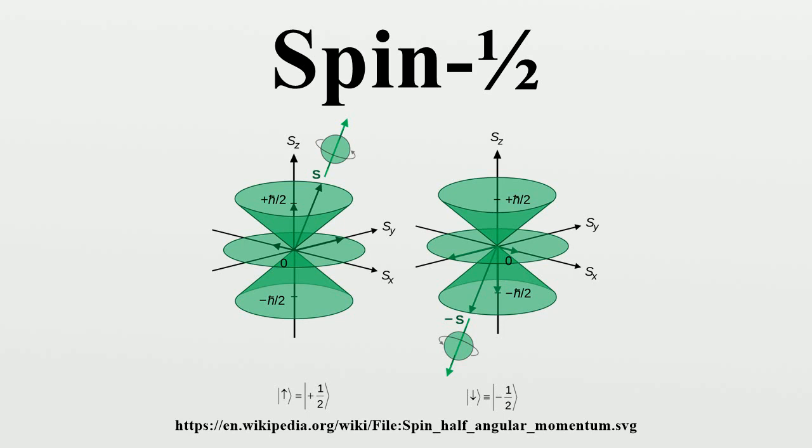A spin one-half particle is characterized by an angular momentum quantum number for spin s of one-half. In solutions of the Schrödinger equation, angular momentum is quantized according to this number, so that total spin angular momentum.